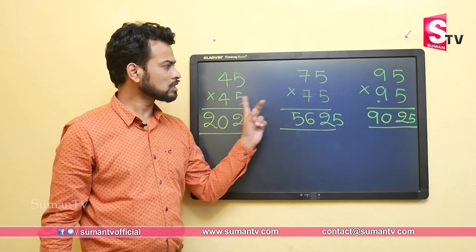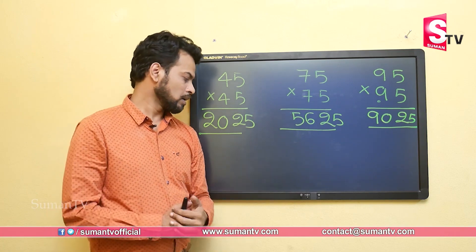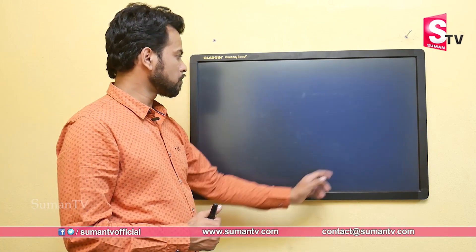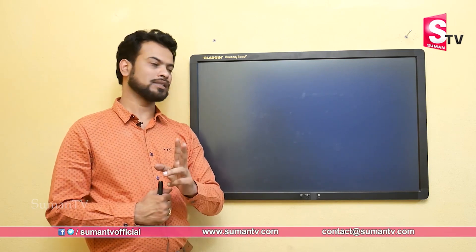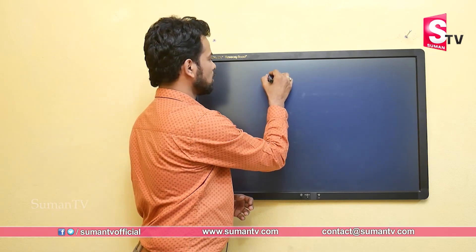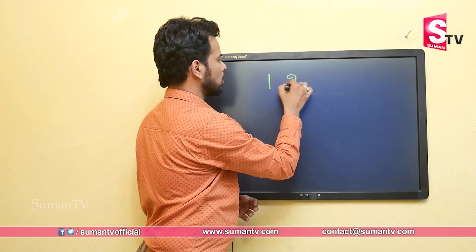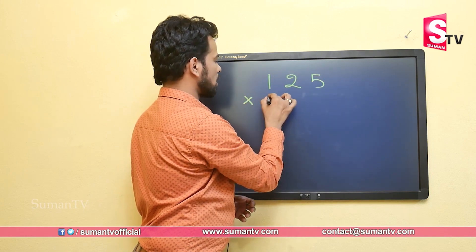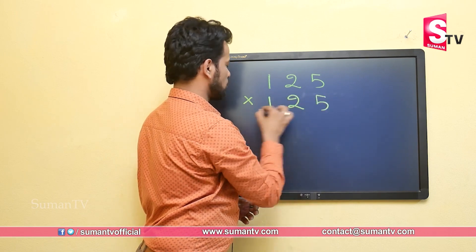This was about double digit numbers. Now let's learn what to do if we have a triple digit number. Let's take the number 125 multiplied by 125.